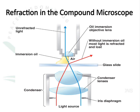Without oil immersion, the condenser focuses rays onto the object, where light passes through the glass slide and then re-enters air. Since the refractive index of air is much less than that of glass, the rays are refracted out of the path of the objective lens — they will not enter the objective lens and cannot focus on any objects. To avoid this refraction, we use oil immersion. The refractive index of oil matches that of glass, allowing light to enter the objective lens properly.